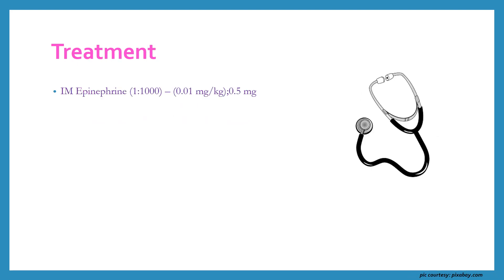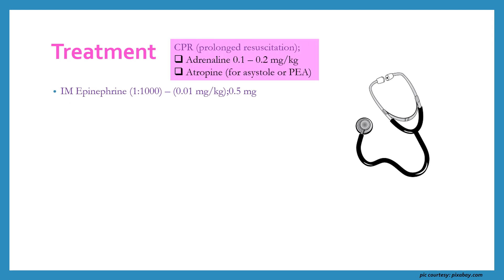The treatment of choice is intramuscular epinephrine in a dilution of 1:1000, which is the normal dilution in which epinephrine is supplied to hospitals. The dose is 0.01 mg per kg or 0.5 mg. If the patient requires CPR due to anaphylaxis, the dose of adrenaline is increased to 0.1 to 0.2 mg per kg, and atropine might also be required in case of asystole or pulseless electrical activity. 100% oxygen or intubation needs to be done, and one must be prepared for cricothyroidotomy.